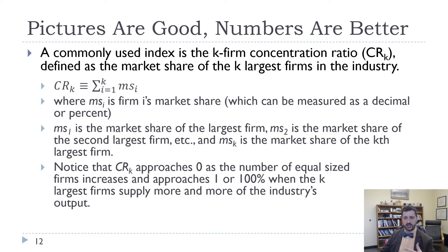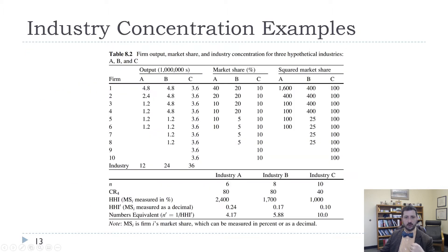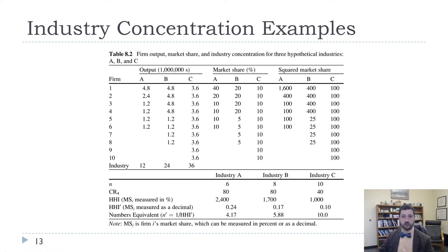Going back to our imaginary industries A, B, and C, we can calculate a CR4 number — the combined market share of the four largest firms. In industry A, that's 40 plus 20 plus 10 plus 10, or 80. For industry B, it's 20 plus 20 plus 20 plus 20, which is also 80. And for industry C, it's 10 plus 10 plus 10 plus 10, or 40. So that's our CR4 for each.